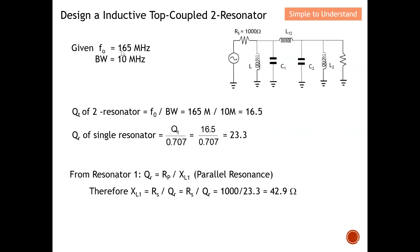The resonant frequency given is 165 MHz, and we are tasked to design a bandwidth of 10 MHz. The equation to find the total circuit Q of the two-resonator is Qt = f0 / BW, where bandwidth is determined by f2 minus f1. Since the question gives bandwidth as 10 MHz directly, I just need to do 165 divided by 10 MHz, which gives a circuit Q of 16.5.